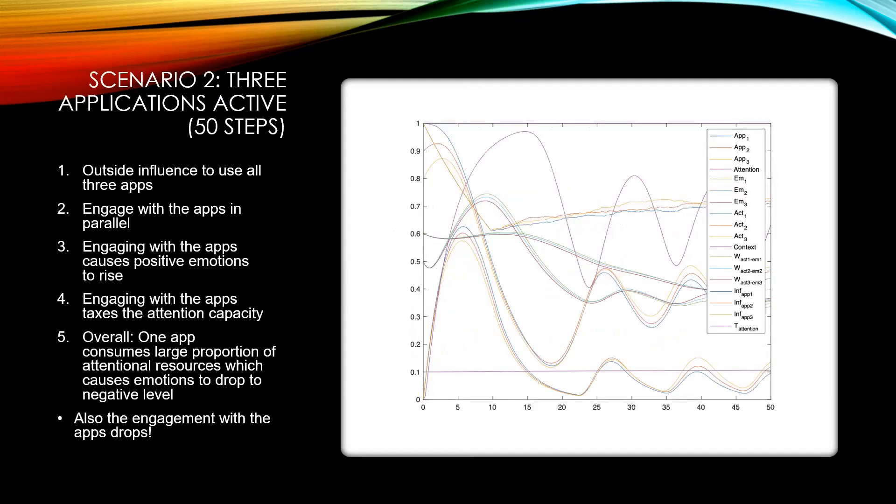In scenario two, we activated three apps to see how having multiple apps would affect the model. We have the same sort of pattern: there's outside influence, then the user engages with the app, then the emotional balance is raised, and the engagement with the app is followed by the attentional tax issue.